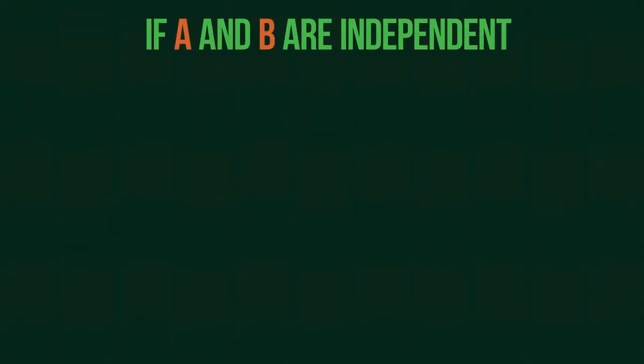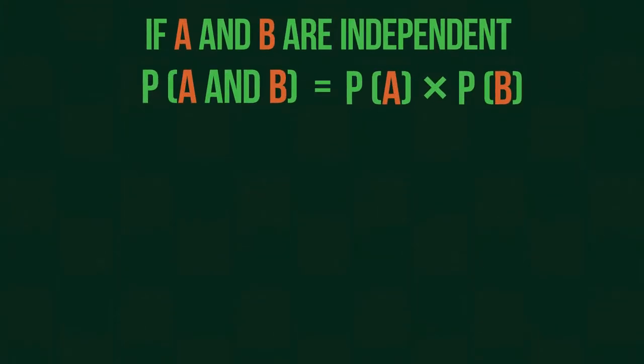If events A and B are independent, then the probability of events A and B is equal to the product of probabilities of event A and event B.